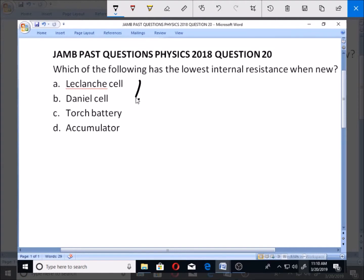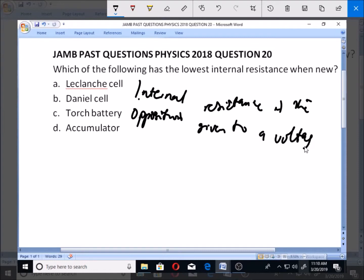So what is internal resistance? We know that internal resistance is the opposition given to a voltage source. That opposition that is given to a voltage source is the internal resistance.